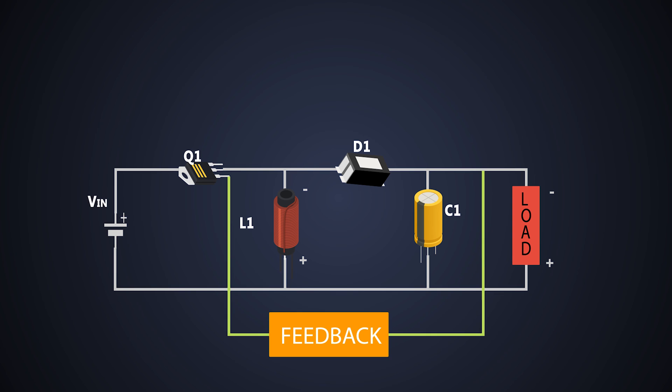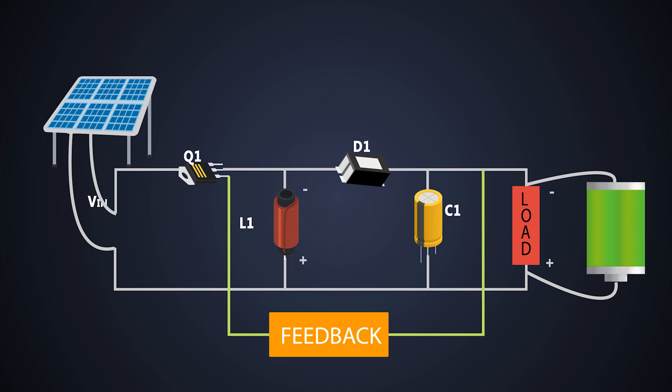The converter like this is very suitable for applications like maximum power point tracking for a solar panel. The voltage generated from solar power is never constant because it changes according to the intensity of sunlight.